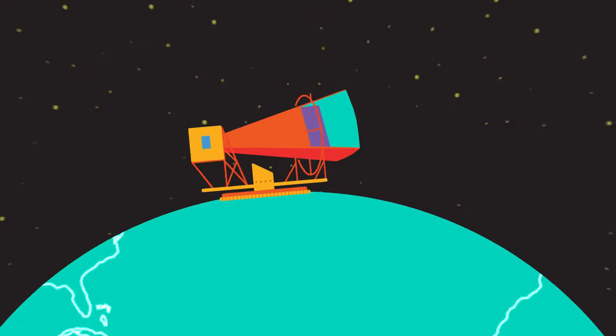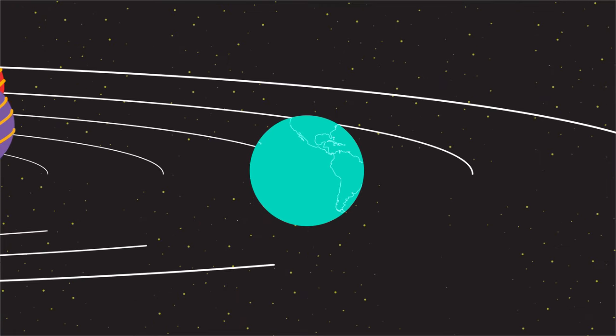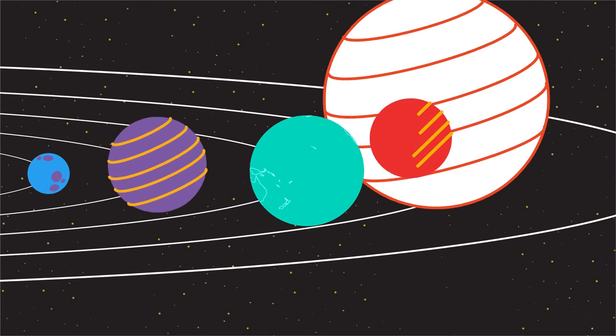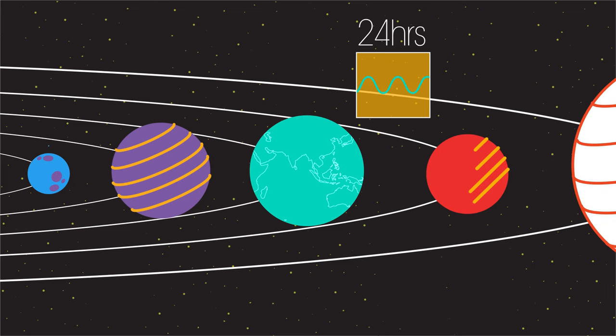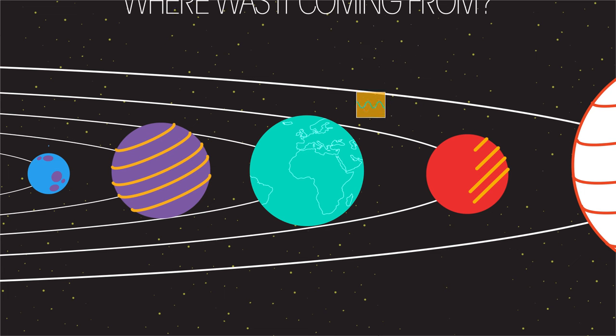As the Earth turned, their antenna pointed to different parts of the solar system. If the source of these mysterious microwaves was in the solar system, the strength of this noise should vary as the Earth turned on its axis. It didn't. This suggested that the noise did not originate in the solar system. So where was it coming from?